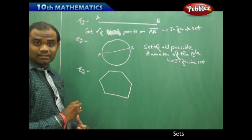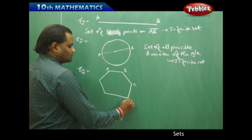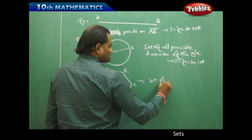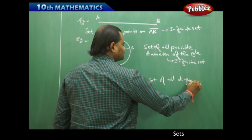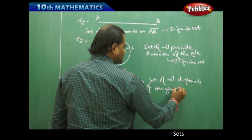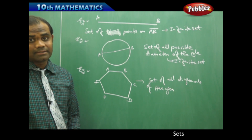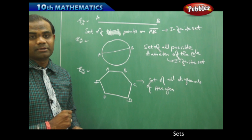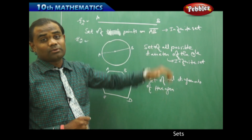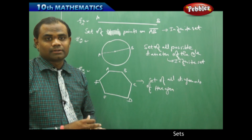Now consider a hexagon — a six-sided figure. The set of all diagonals of a hexagon will not be an infinite set, but a finite set. I can draw infinitely many diameters on a circle and pick infinitely many points on a line, but I cannot pick infinitely many diagonals. The diagonals are restricted and countable.